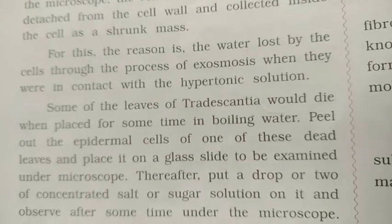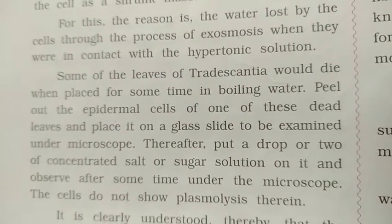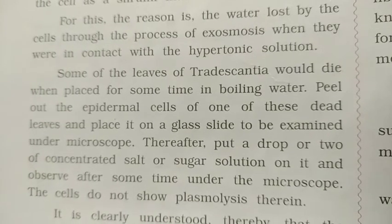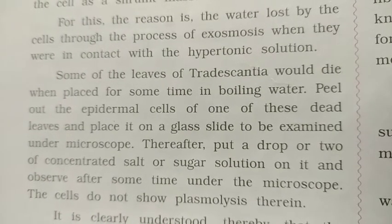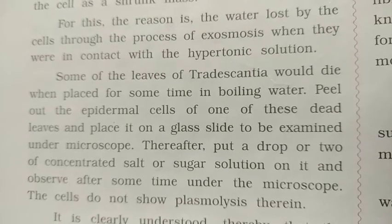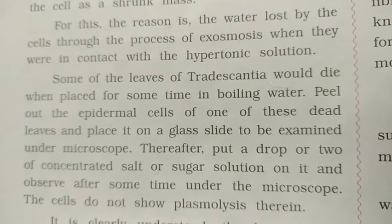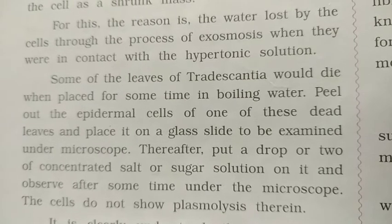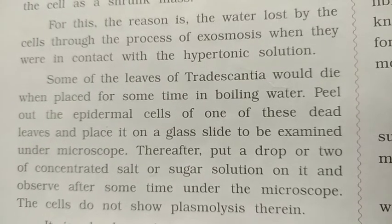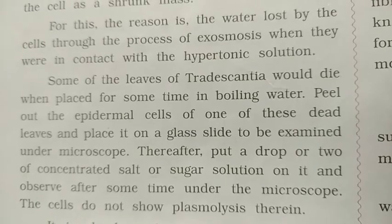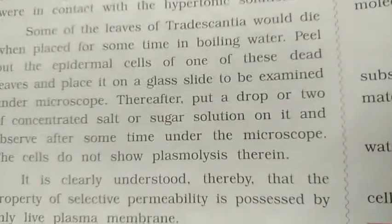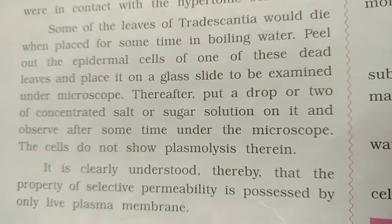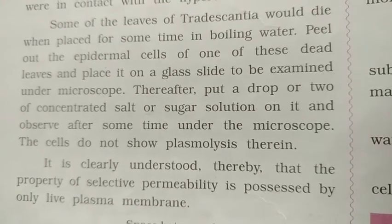Some leaves of Tradescantia are killed by placing them in boiling water for some time. Peel out the epidermal cells of one of these dead leaves and place it on the glass slide to be examined under the microscope. Thereafter, put a drop or two of concentrated salt or sugar solution on it and observe after some time under the microscope.